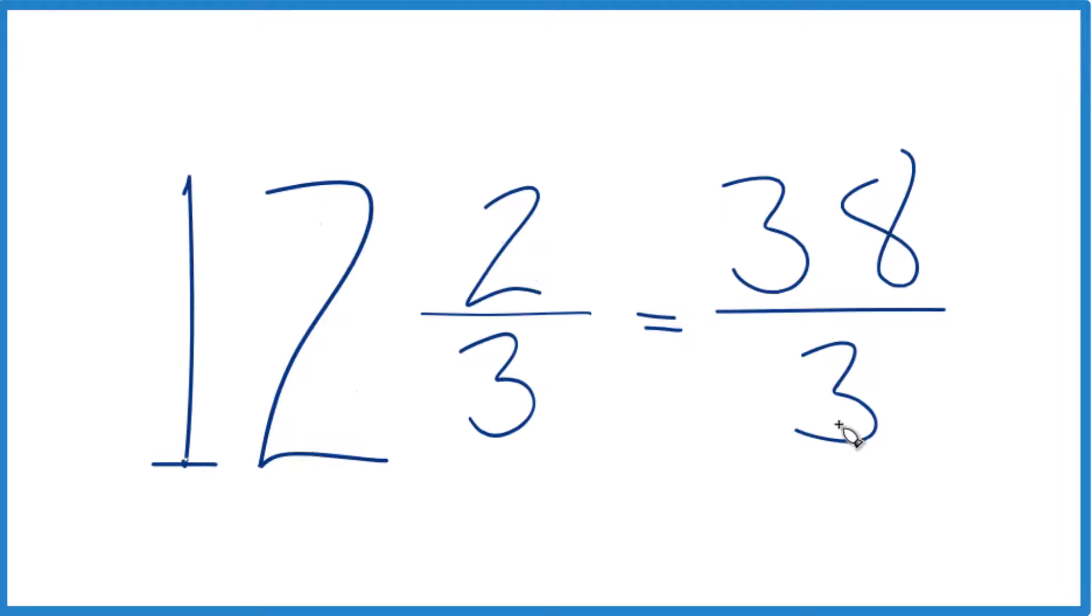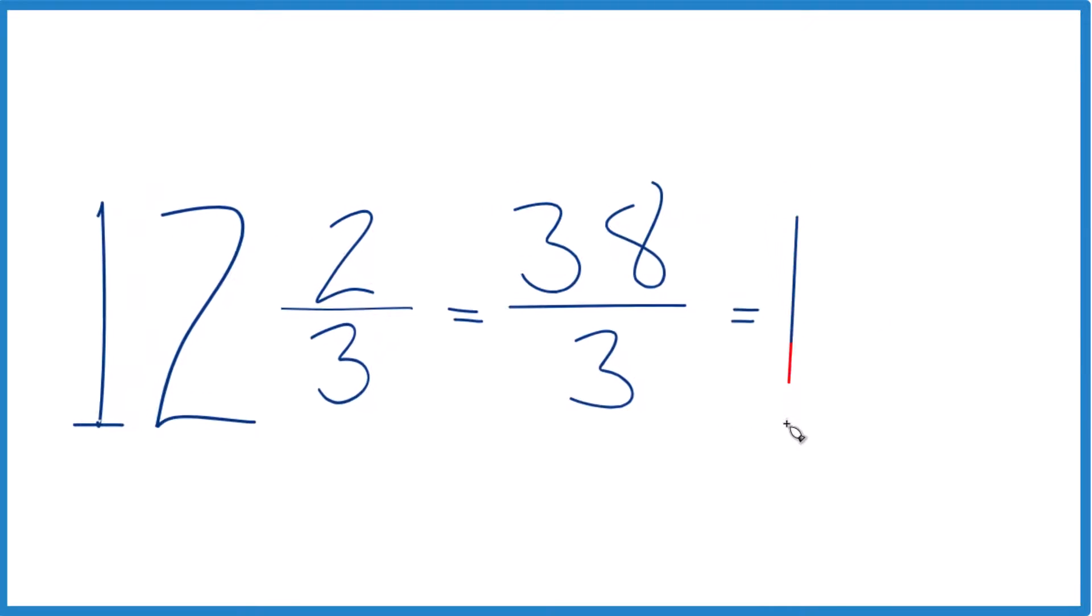Let's check our work, because 3 goes into 38. 3 times 12, that would be 36, and we have 2 left over, and we just bring the 3 across, and we get 12 and 2 thirds. That's the same mixed number as we started with, so we did it correctly.